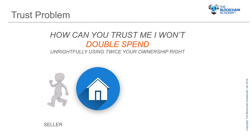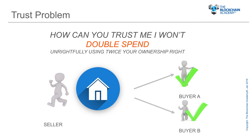And even more importantly, how can you trust me that I won't double spend — meaning that I unrightfully use twice my ownership right? For example, I sell my house a first time to buyer A, and one hour later I sell it also to buyer B. And then I run.